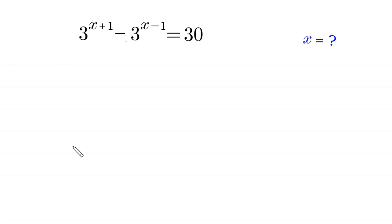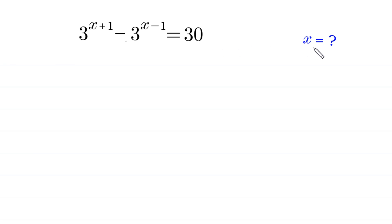Hello, welcome to how to solve this very nice exponential equation. 3 to the power x plus 1 minus 3 to the power x minus 1 is equal to 30. We need to find all possible values of x.